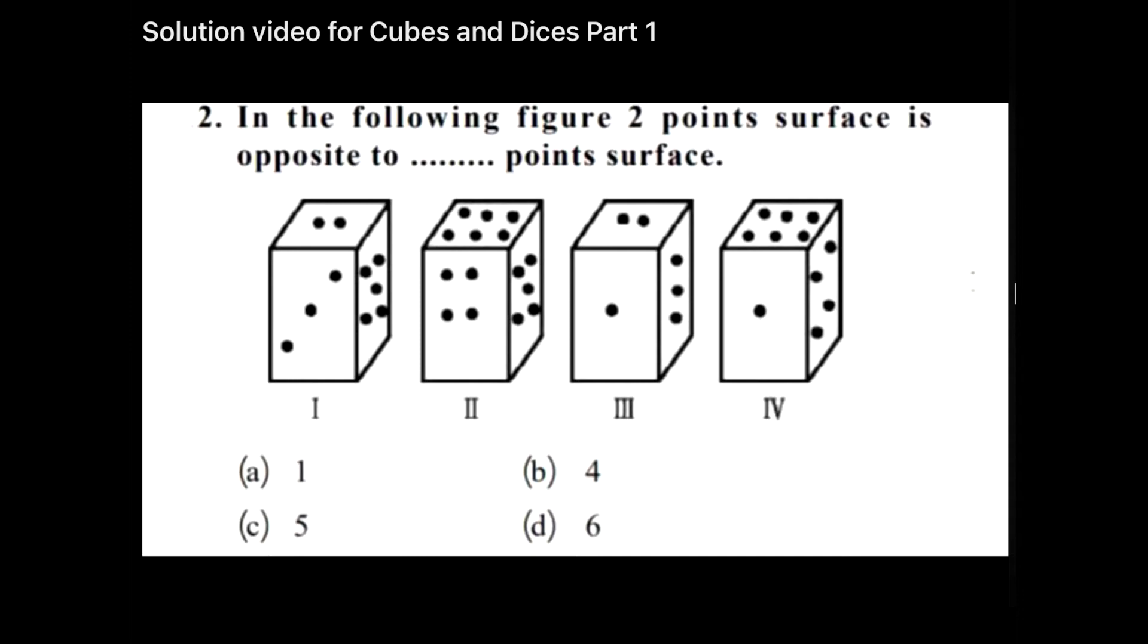Let's get started with the solution. The question asks us to find out which one side will be opposite to the side having two points on the surface.